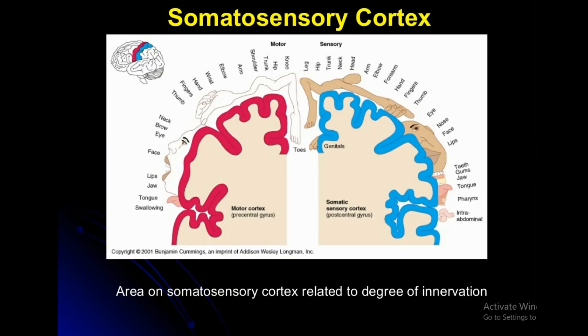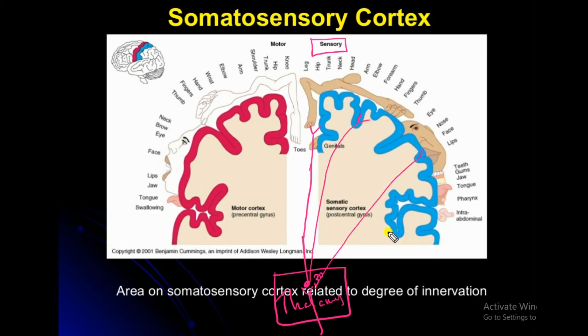You can see a homunculus here. I am drawing the thalamus. From the thalamus the third order neurons get into the cerebral cortex, the various regions of the cerebral cortex.